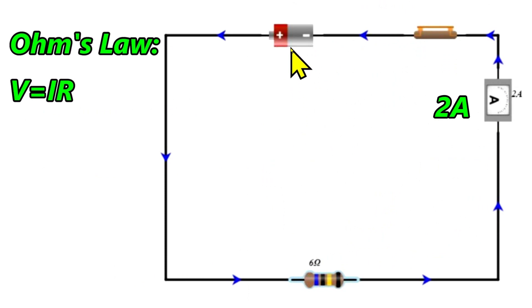Here we have a circuit. This is a battery, and this is a switch. The switch is on, which means that is a closed circuit. If it was off, it would be an open circuit. And then over here we have an ammeter, and the ammeter is reading two amps. Ammeters measure amperage, and over here we have a resistor, which is rated at 6 ohms.